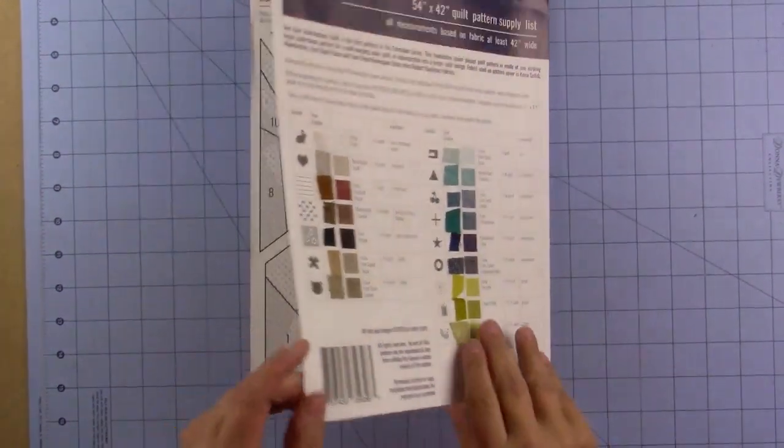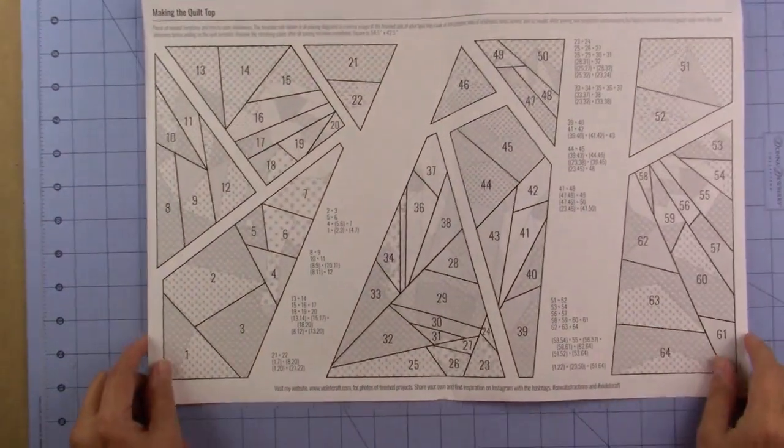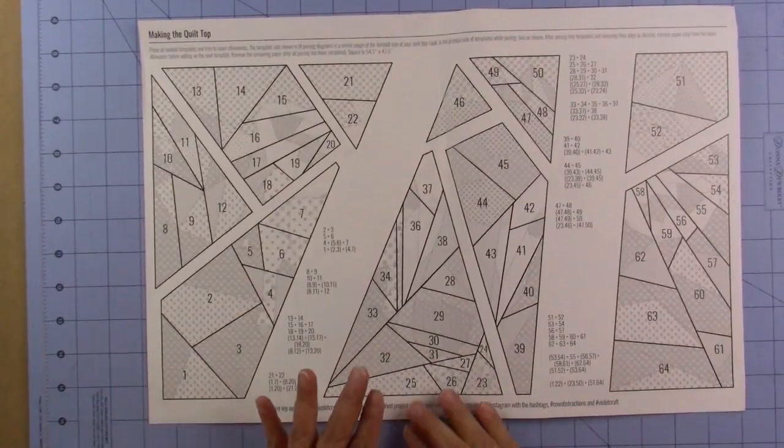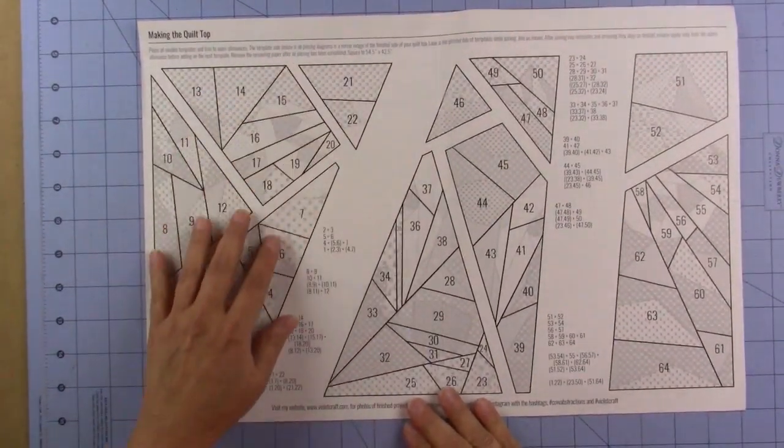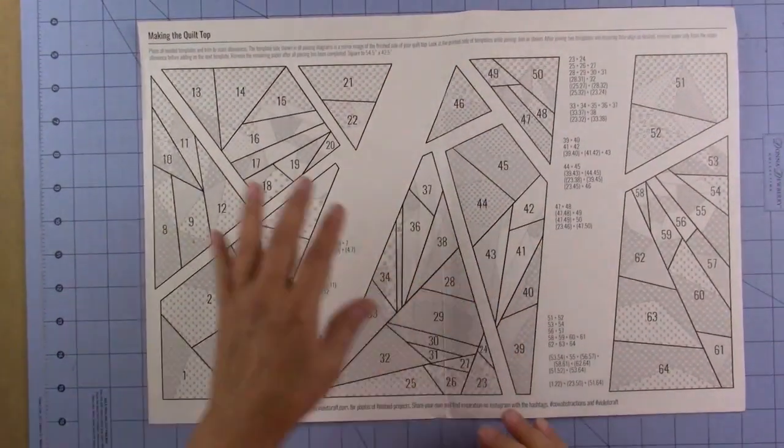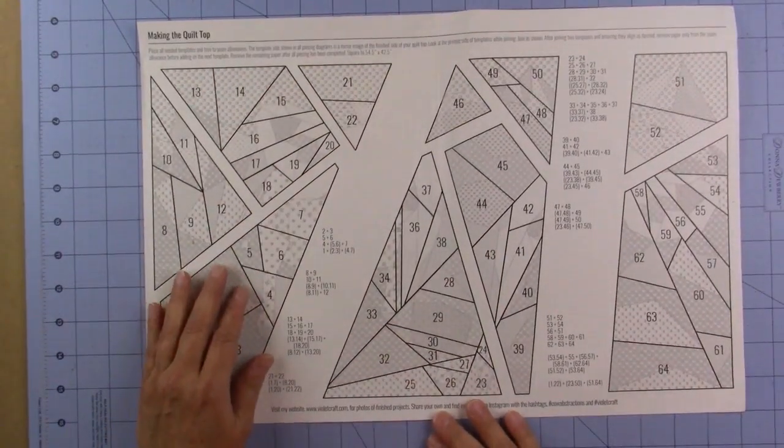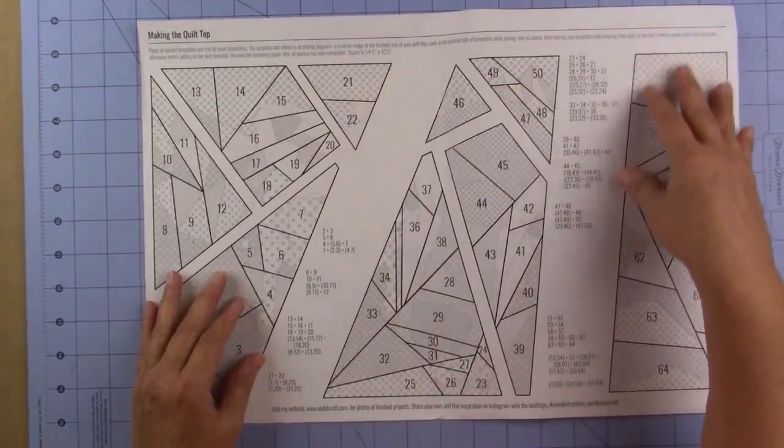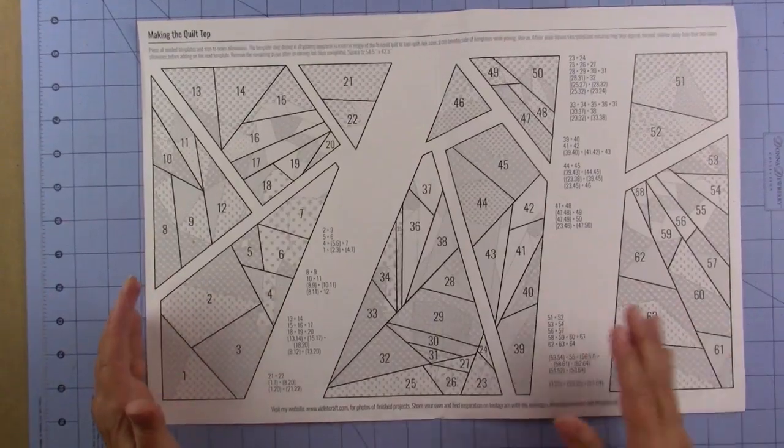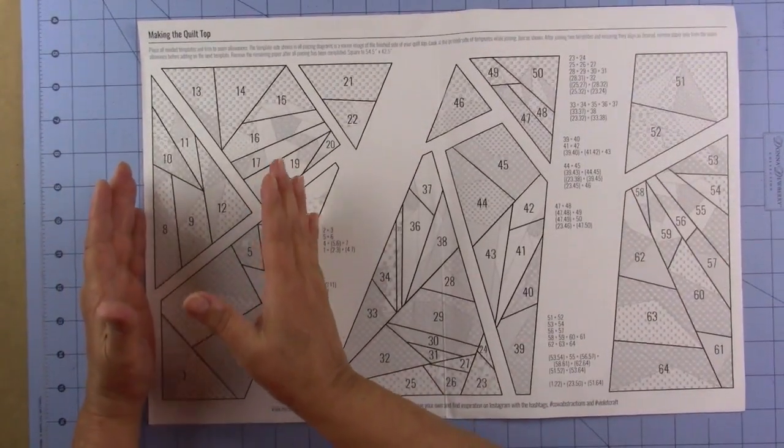As I showed you in the introductory video, the pattern is divided into three main sections. I'll call this one the left section, the center, and the right section, and you're going to work on these in order.